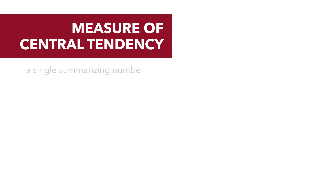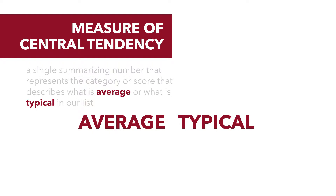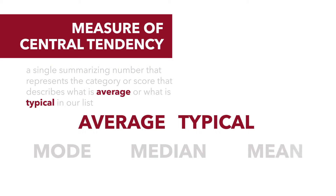What is a measure of central tendency? It's just a single summarizing number that represents the category or score that describes what is average or what is typical in our list. We're going to talk about three measures of central tendency: mode, median, and the mean.